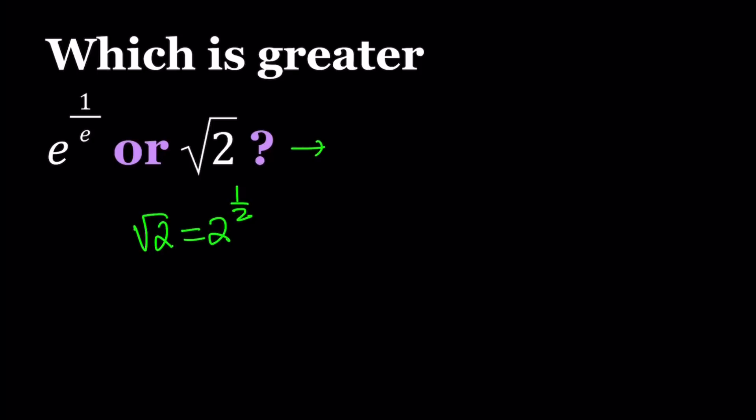Great. So this kind of gives us these two numbers to compare: e to the power 1 over e versus 2 to the power 1 over 2, which is kind of nice because they have the same type of structure.